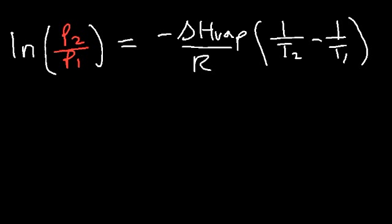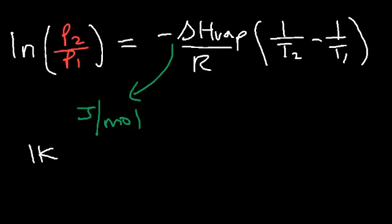The enthalpy of vaporization has the units joules per mole, not kilojoules per mole — it has to be in joules. If you need to convert kilojoules into joules, multiply by 1000. Going from kilojoules to joules, multiply by 1000; from joules to kilojoules, divide by 1000.